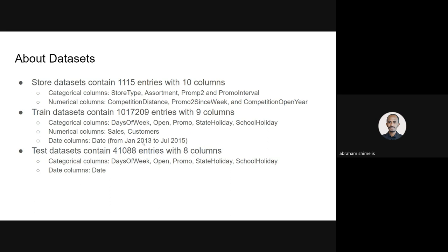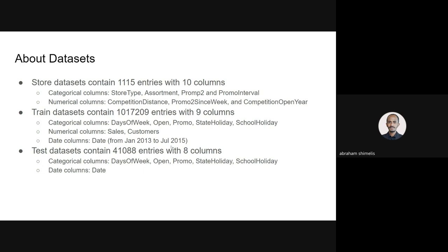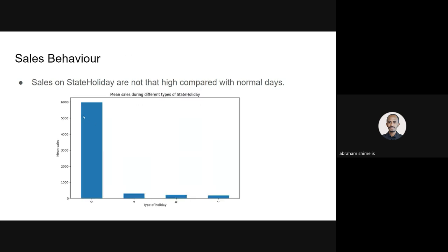The range of the data is between 2003 and 2015. I tried to do basic exploratory data analysis on the given data. I tried to analyze the distribution of promotions as suggested in the challenge document — the distribution between promotion on training and test data. As you can see, the distribution is the same, which is good.